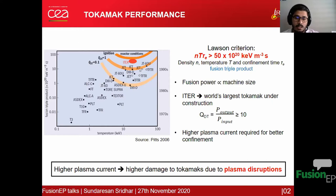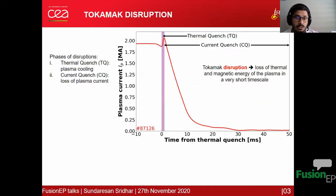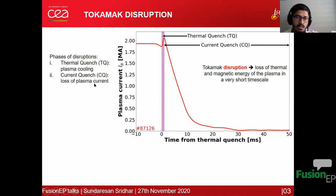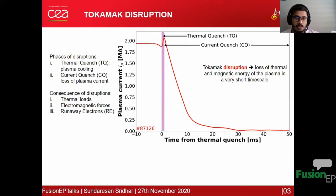The problem is that when you go to higher plasma current, the corresponding damage to the tokamak due to plasma disruptions increases with plasma current. In a plasma disruption — also called a tokamak disruption — there is a loss of thermal and magnetic energy of the plasma on a very short timescale, as shown in this figure where the plasma current drops very rapidly. There are two main phases: the thermal quench phase, in which thermal energy is lost, and the current quench phase, in which the plasma current decays rapidly. There are three main consequences: thermal loads, electromagnetic forces, and runaway electrons.